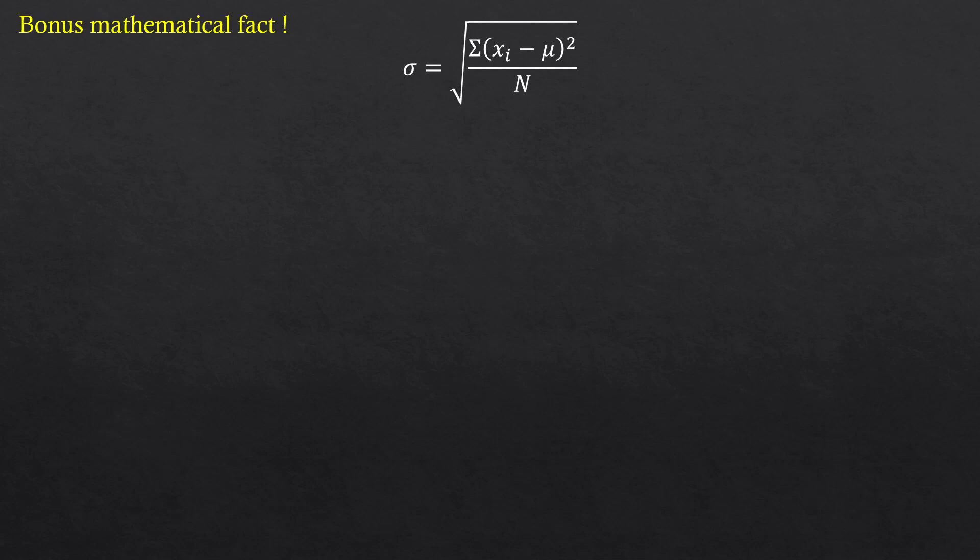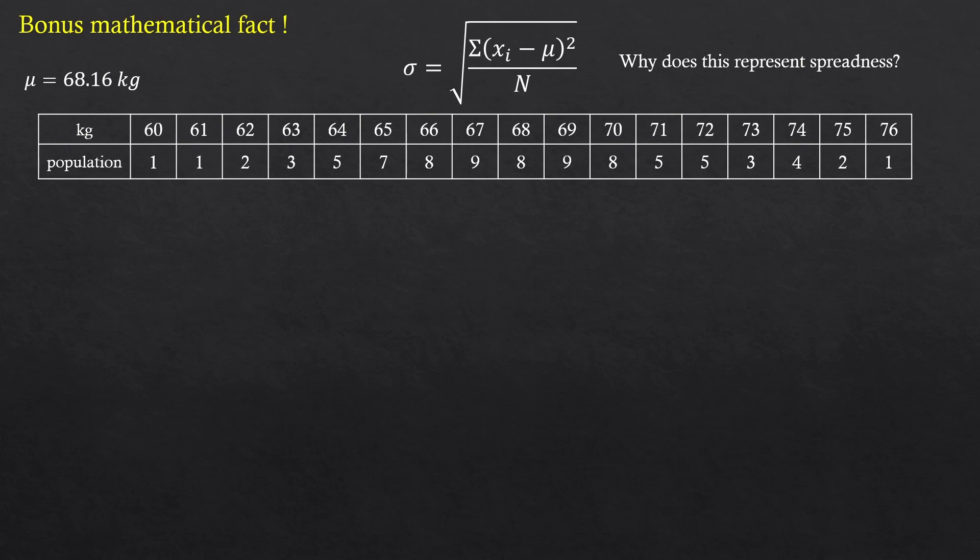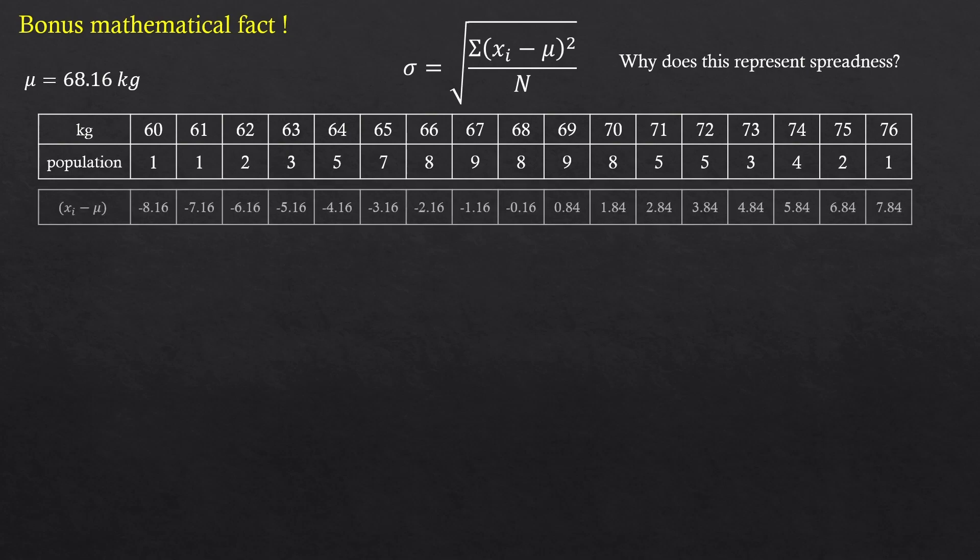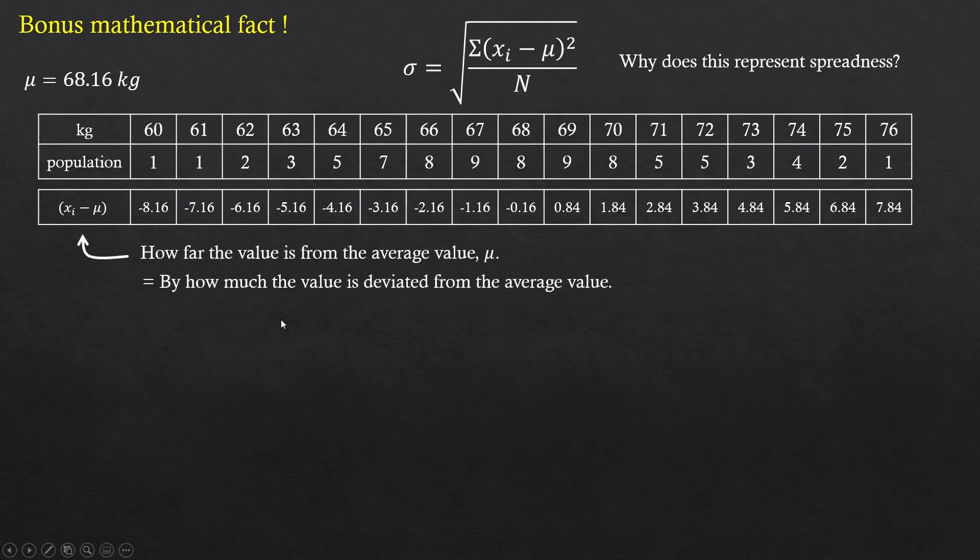And for those who still got some time to watch, here's one bonus fact. Why is standard deviation mathematically defined this way? Why does this represent spreadness of the data? I'll bring the chart again. At one point, we were at this row. And think about this x sub i minus mu. If you think about it, this should give how far each weight value is from the average we obtained. And this literally means by how much the values are deviated from the average value.